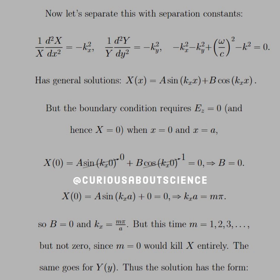Now let's separate this with separation constants. We'll let each constant be negative k_x squared and negative k_y squared, and then the sum of negative k_x squared and negative k_y squared plus (omega over c) squared minus k squared equals zero. Those are our conditions for separation of variables.